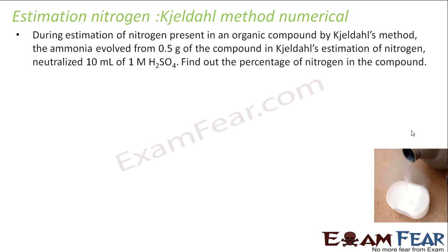Now let's take a numerical. The question says: during estimation of nitrogen by Kjeldahl's method, the ammonia evolved from a 0.5 gram sample is neutralized by 10 mL of 1M H₂SO₄. We have to find the percentage of nitrogen in the compound.